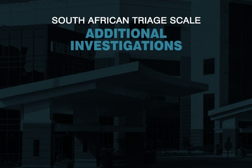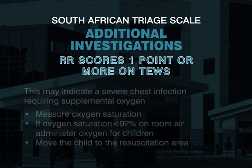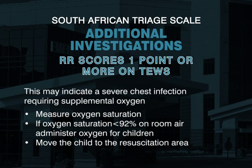If respiratory rate scores one point or more on the TUES, this may indicate a severe chest infection requiring supplemental oxygen. Measure the oxygen saturation. If it is found to be less than 92% on room air, administer oxygen for children and move to the resus area.